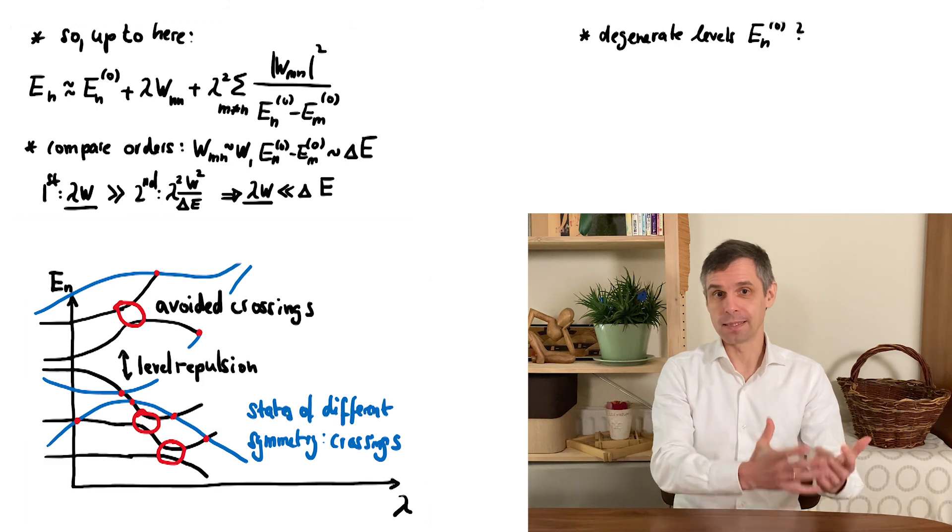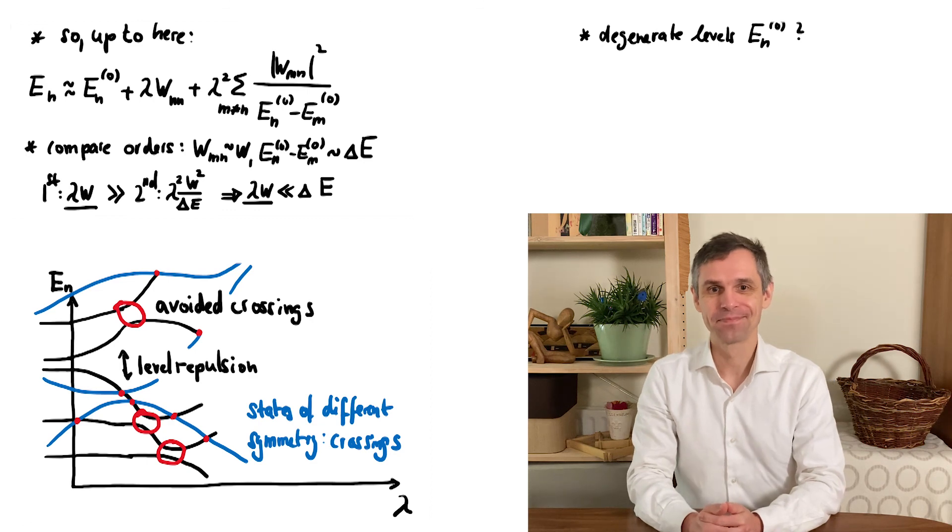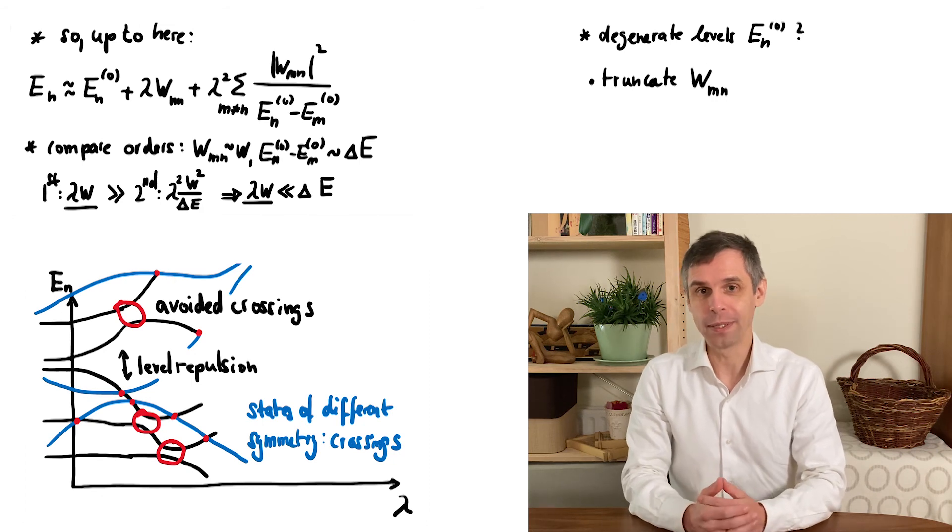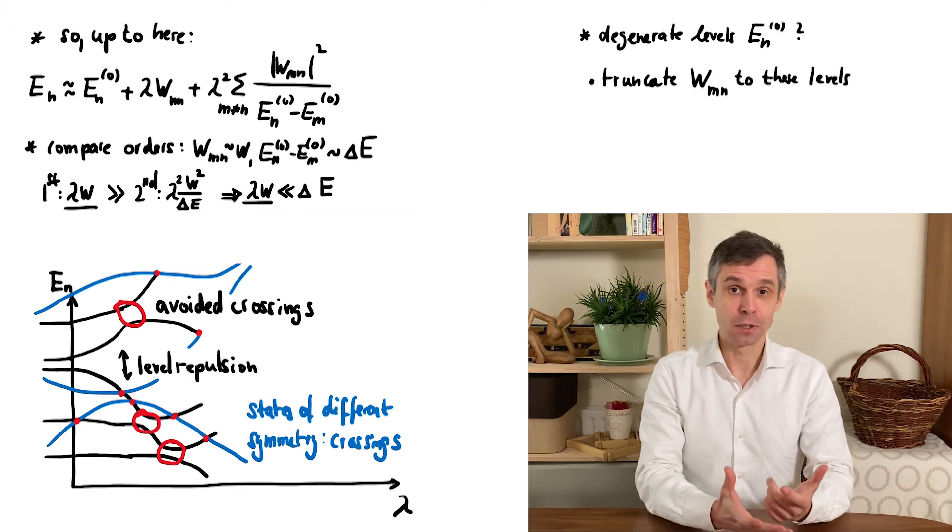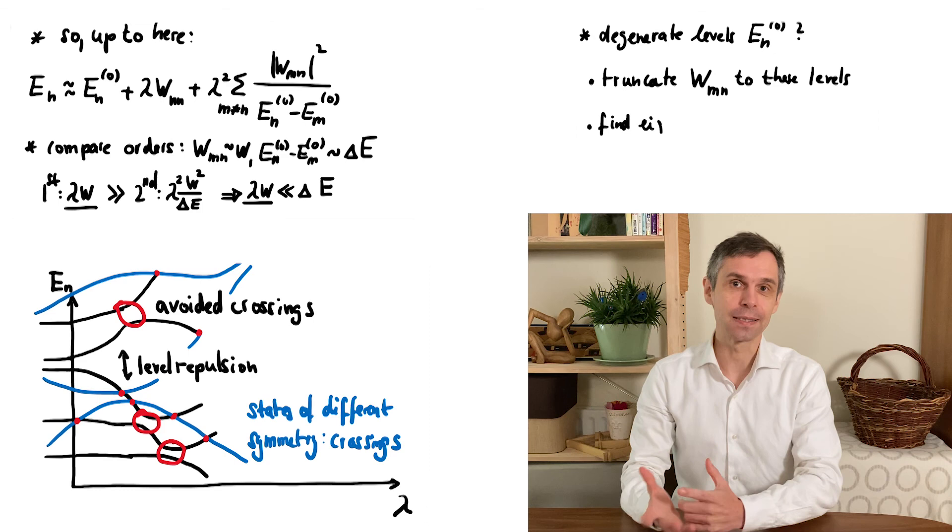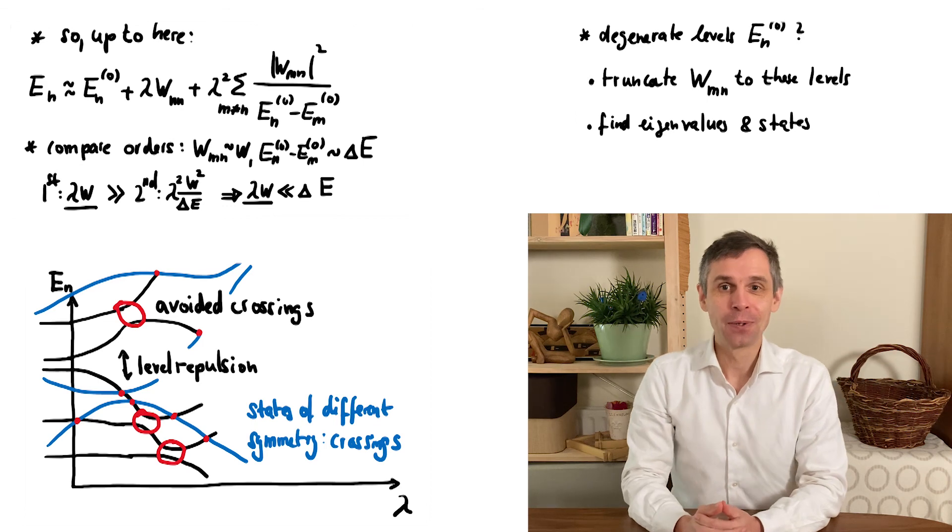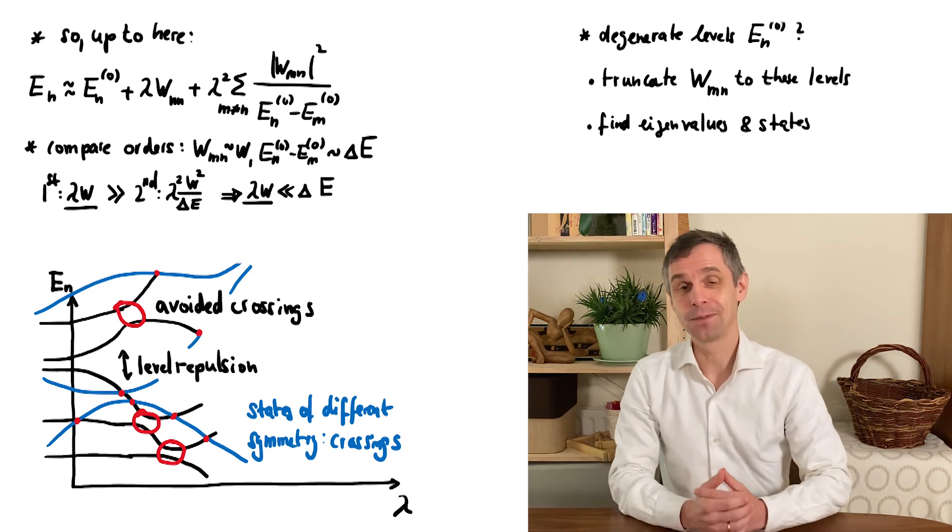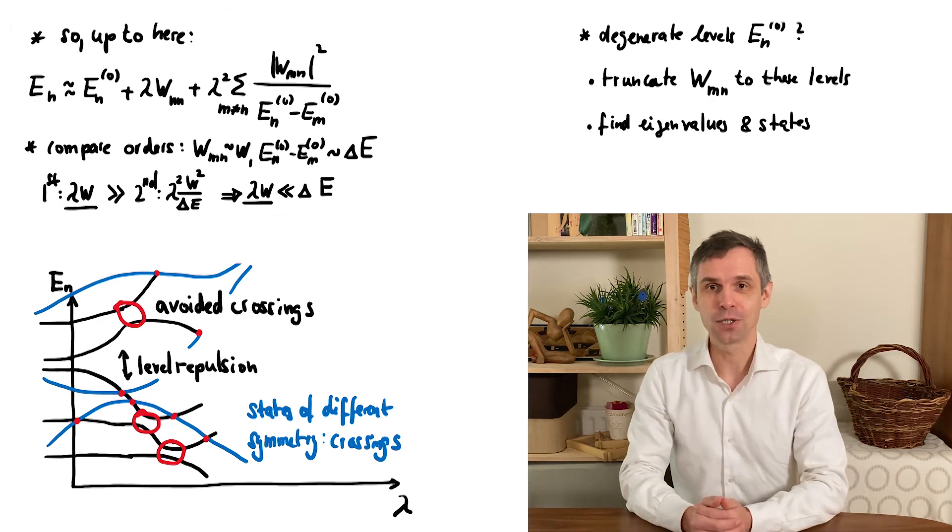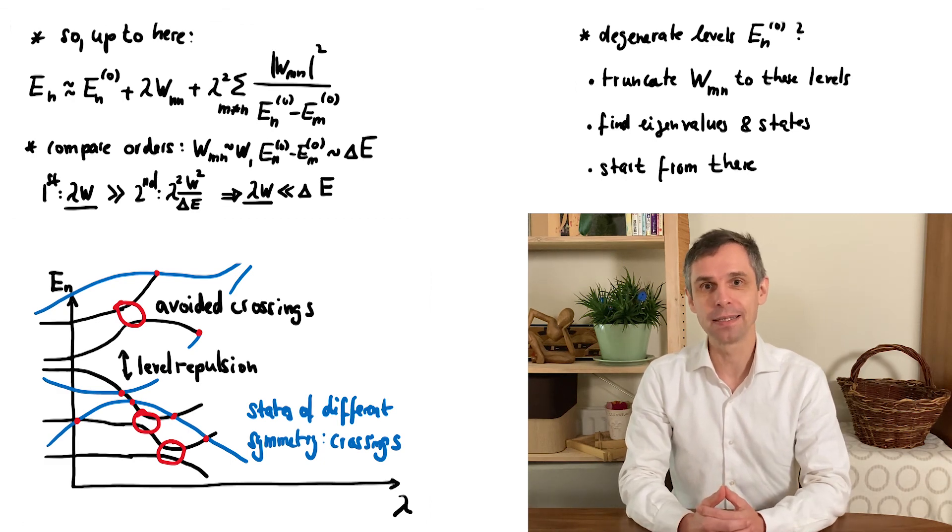To figure out what happens then, we have to adjust our approach and apply what is known as degenerate perturbation theory. There we simply first truncate the system to the degenerate states, hoping that there aren't too many. That just involves the matrix of the perturbation truncated to these states. And then we find the eigenvalues and eigenstates of this truncated matrix. Often that's already all that you want to know because it gives you the energies and states including the main effect of the perturbation. And if you want to carry on to even more accurate approximations, you can take these as a new starting point and then proceed perturbatively along the lines described above.